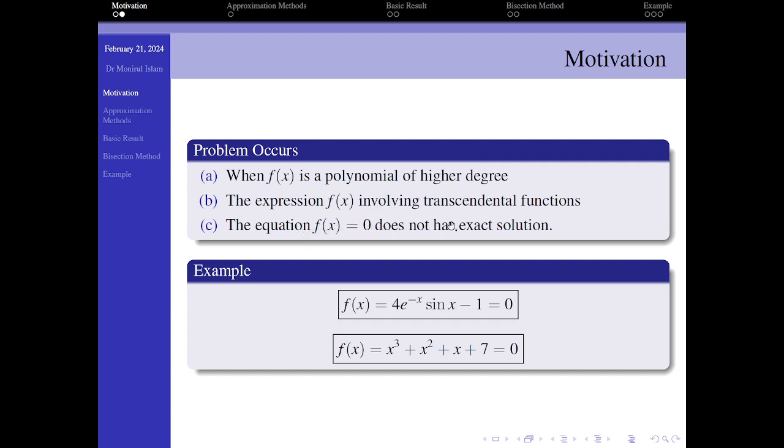Or the equation does not have exact solution. In that case, we can see here f(x) = 4^x * sin x - 1 = 0. In this case, the algebraic formulas are not available, so we have to use another method to find the root by using approximate methods.